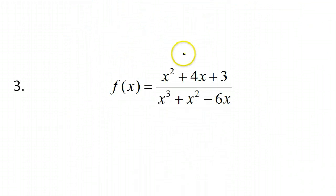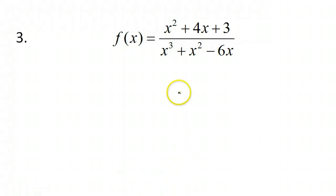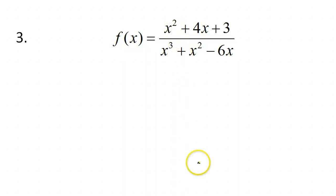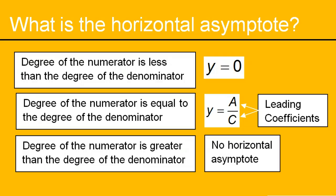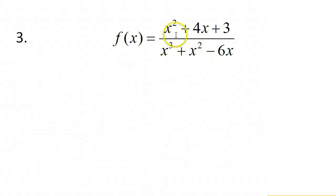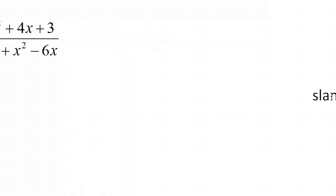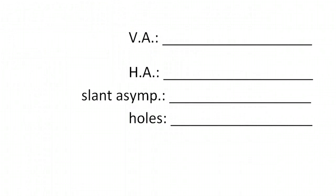Let's take a look at problem number three. The slant asymptote can only happen if the top degree is one higher than the bottom — that's not happening here, so there is no slant asymptote. What about the horizontal asymptote? If the numerator degree is less than the degree of the denominator, then it's automatically y equals zero for the horizontal asymptote. That's what's happening here — the numerator degree is two, the denominator three. So y equals zero for the horizontal asymptote.